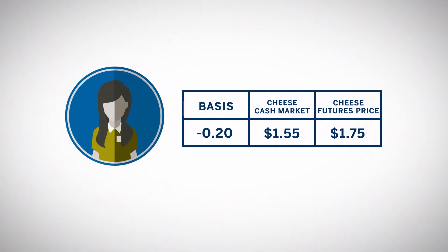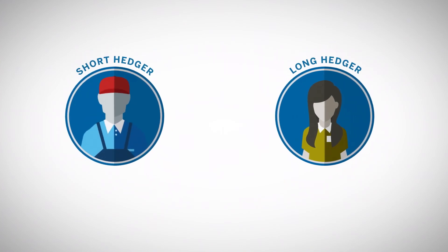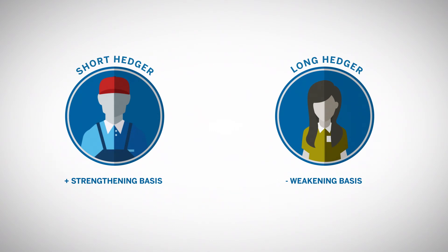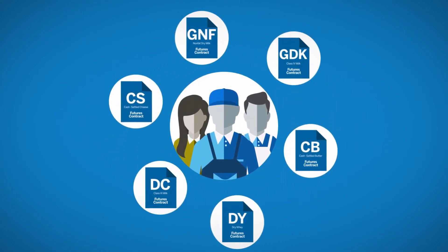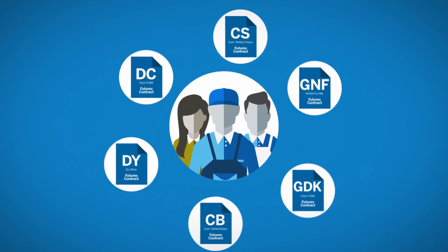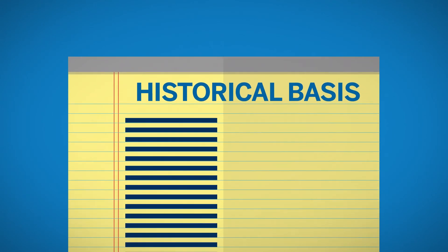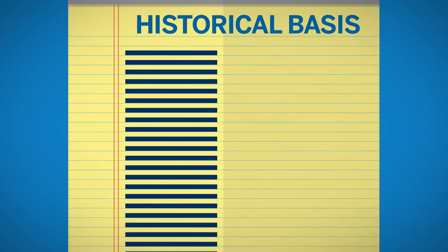If the cash price for cheese increases relative to the futures price — for instance, if the cash price increases to $1.65 and the futures price increases to $1.80 — the cheese basis will strengthen to $0.15 under. The basis will also strengthen if the cash price drops to $1.50 and the futures declines to $1.65. A strengthening basis benefits a short hedger because it will increase the selling price, while a weakening basis decreases it. Long hedgers benefit from a weakening basis since it gives them a lower expected purchase price. Therefore, it is important that hedgers maintain historical basis records in order to compare the current basis with the expected basis at the time of the ultimate purchase or sale.